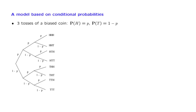As an introduction to the main topic of this lecture sequence, let us go through a simple example, and on the way review what we have learned so far. The example involves three tosses of a biased coin — a coin that results in heads with probability p, where p is not necessarily equal to one half.